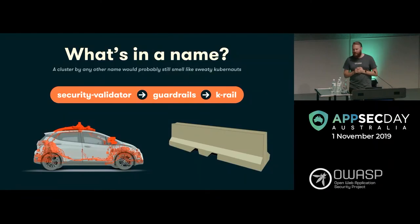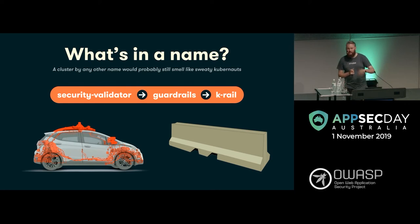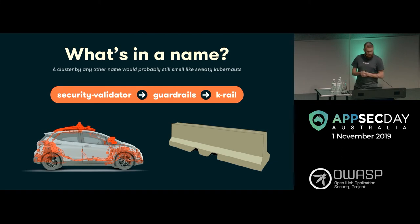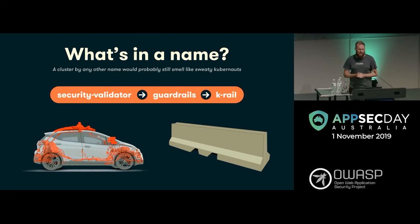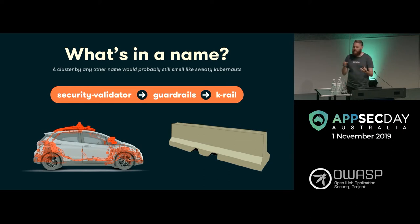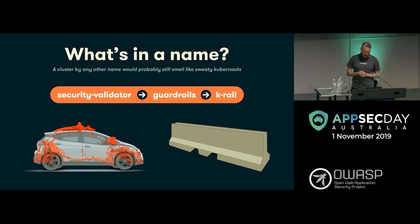What's in a name? We got accepted at KiwiCon under the name Guardrails. Internally it was just called Security Validator — kind of boring. We thought Guardrails was really good given the car metaphor and it kind of keeps things on track. Unfortunately, Guardrails.io is already a security thing and we didn't want to get sued. K-Rail is actually the name of those concrete barriers — also known as Jersey barriers — and it's the same apt thing.